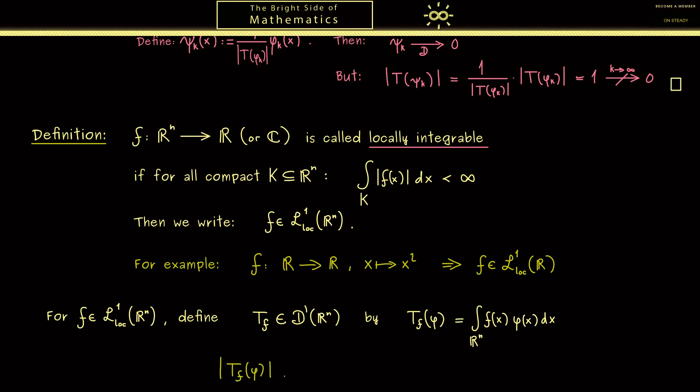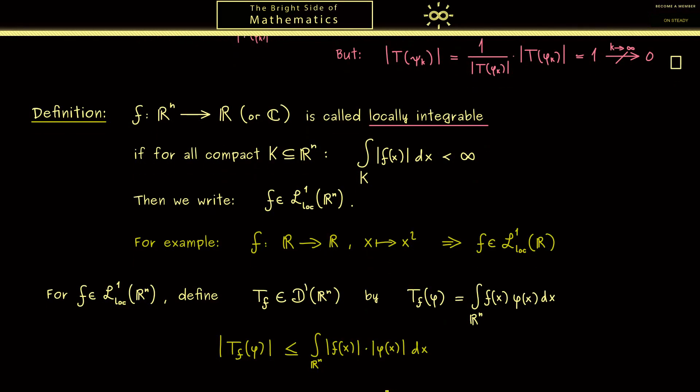So we have the absolute value of T_f of phi. We can pull in the absolute value into the integral, and we can also easily split it up. Now instead of R^n we can just write the support of phi, simply because outside a function phi is 0, which has no contribution to the integral. Also we know we can estimate this one with the supremum norm of phi. Hence we have the integral of f in the absolute value times the supremum norm of phi. Of course we can integrate here over any compact set K as long as it is a superset of the support of phi.